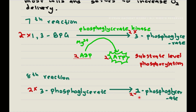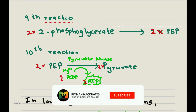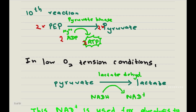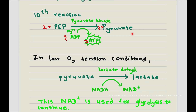Then, 2-phosphoglycerate is turned into phosphoenolpyruvate. Phosphoenolpyruvate with the help of pyruvate kinase is turned into two molecules of pyruvate, and in this reaction two more molecules of ATP are made. This pyruvate, with the help of pyruvate dehydrogenase, turns into acetyl-CoA, which enters the citric acid cycle — that is the next step of carbohydrate metabolism. Glycolysis is the first reaction of it.